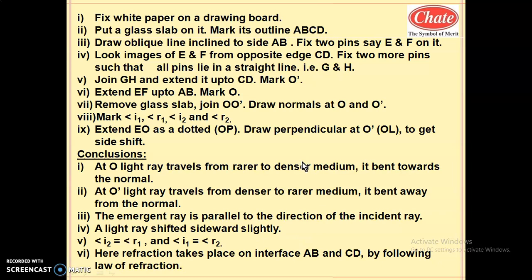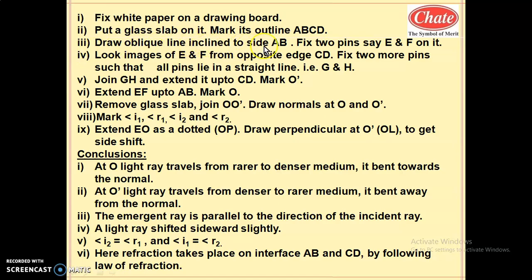Let us write the notes on this activity. First point: fix white paper on a drawing board. Second point: put a glass slab on it and mark its outline ABCD. Draw an oblique line inclined to side AB. Fix two pins E and F on that oblique line. Look at the images of E and F — you have to observe the images, not the object.